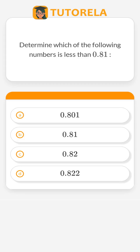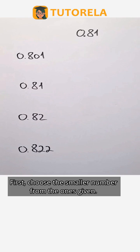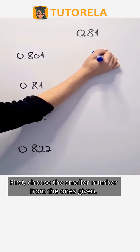Determine which of the following numbers is less than 0.81. First, choose the smaller number from the ones given.